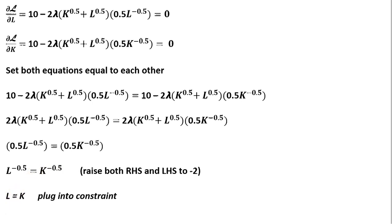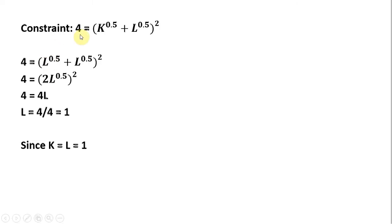So here's our constraint. We're going to produce four units of output, so Q is 4, according to the CES production function. Since K equals L, I'm just going to set this K term equal to L. That's what we found in the last slide, K equals L. So substituting and now simplifying.